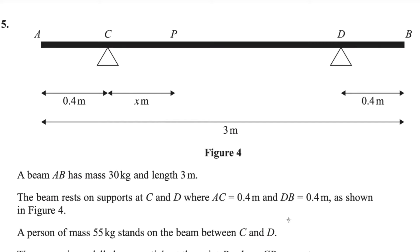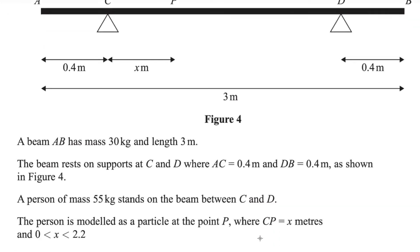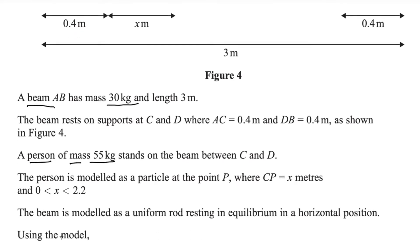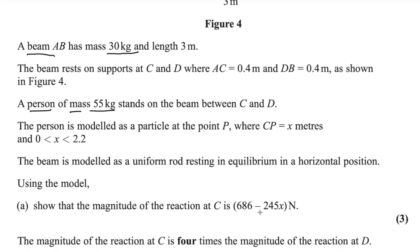A beam has mass 30 kg and length 3 meters. The beam rests on supports at C and D, where AC equals 0.4 m and DB equals 0.4 m as shown in figure 4. A person of mass 55 kg stands on the beam between C and D, modeled as a particle at point P, where CP equals x meters and x lies between 0 and 2.2. The beam is modeled as a uniform rod resting in equilibrium in a horizontal position. We need to show that the magnitude of the reaction at C is 686 minus 245x Newtons.